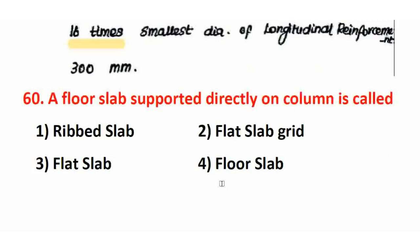Next question: If a floor slab is supported directly on columns, it is called? The right answer is B — flat slab. A flat slab has no beams; the floor slab is supported directly on columns. Drop panels can also be provided at the column-slab joint. Floor slab supported directly on column is called a flat slab.